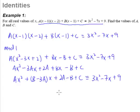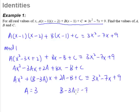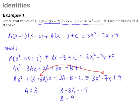Now we compare. It is obvious that A has to be equal to 3, simply because Ax² is the same as 3x², therefore A = 3. Likewise, we can form an equation: B - 3A = -7. Since A = 3, we get B - 9 = -7, and therefore B = 2.